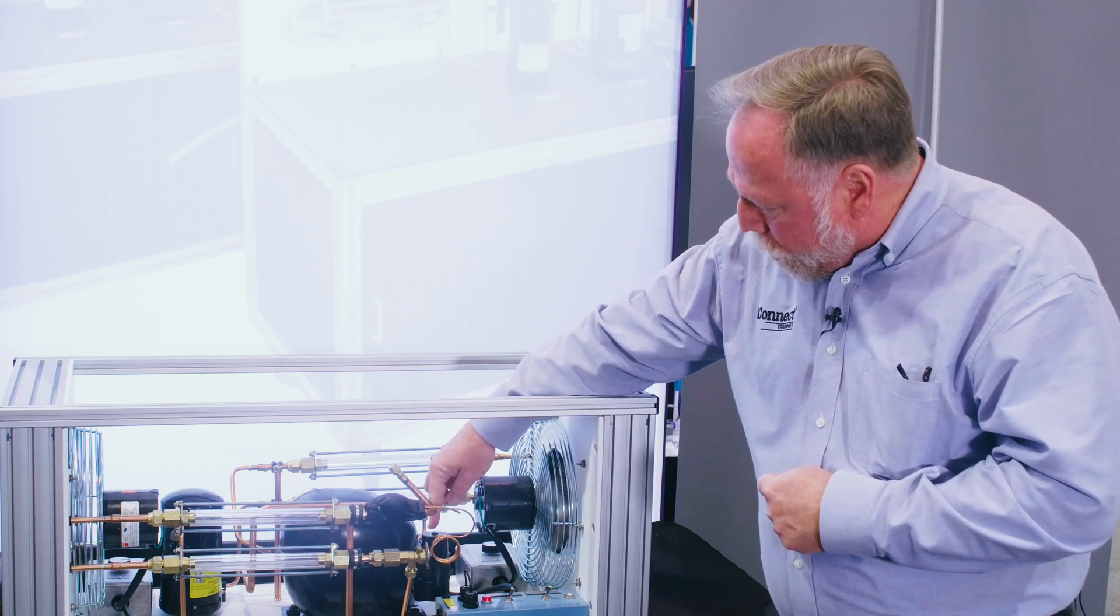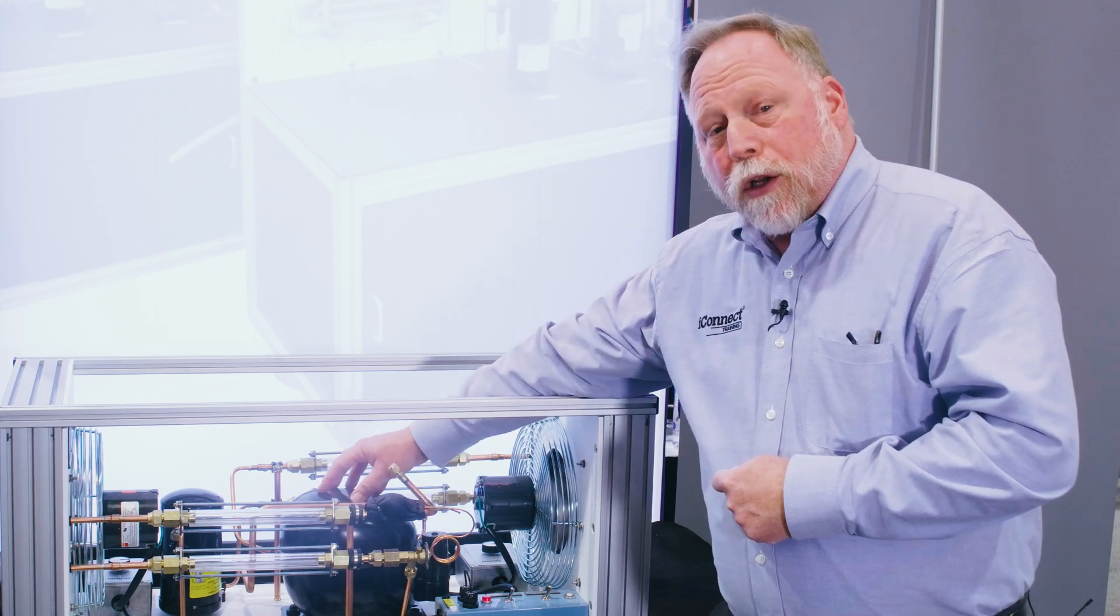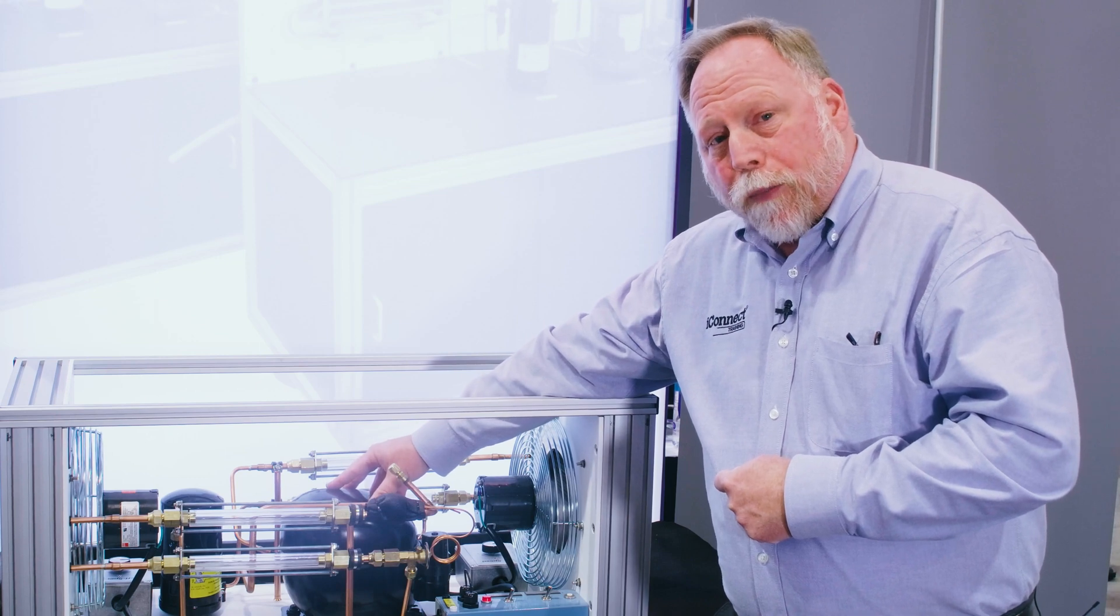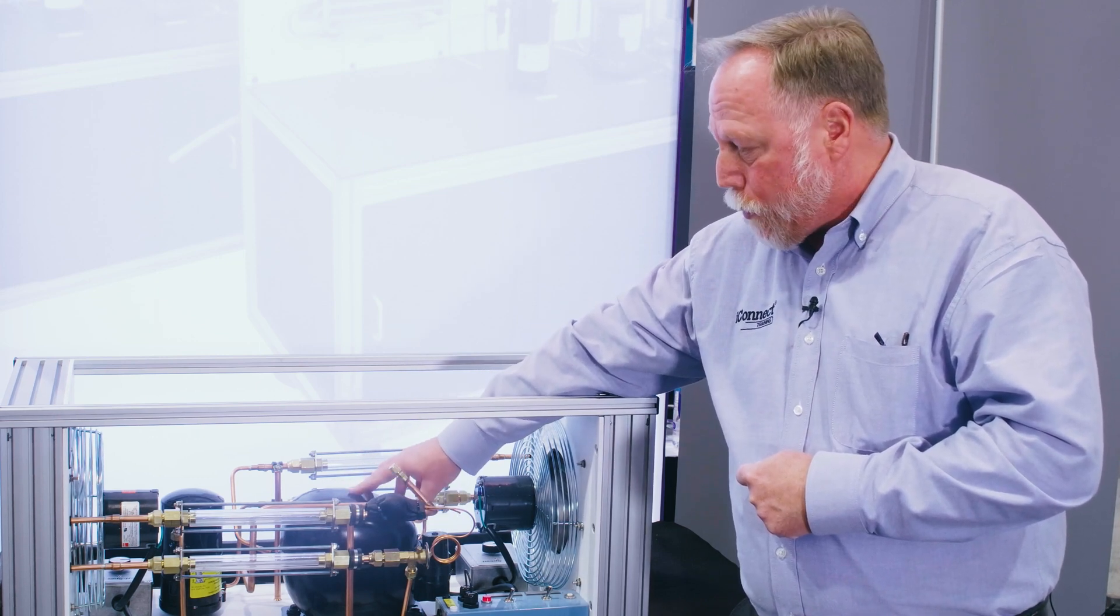With the electrical side over here, you can also show them the compressor. You can have them take it loose and we can ohm out the windings of the compressor. And you can show them how to wire up a start kit for this compressor as well.